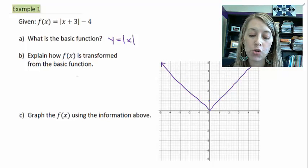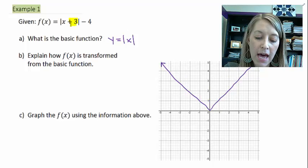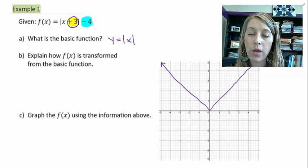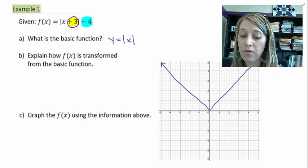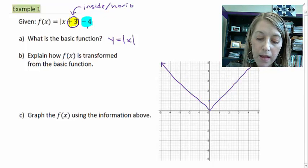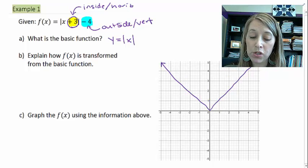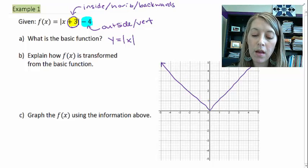Going back to the basic functions, we have seven of them and want to pick the one that most closely matches our example. This example has absolute value in it, so the basic function we compare it to is y equals absolute value of x. We might already know what that graph looks like, so I'll draw it on here — that will give a better image when I transform it.